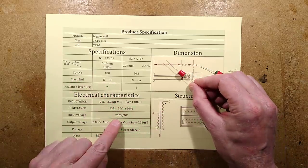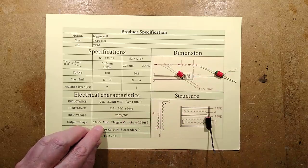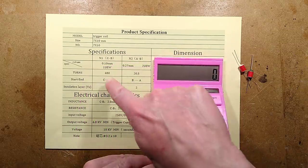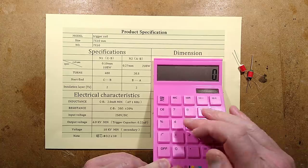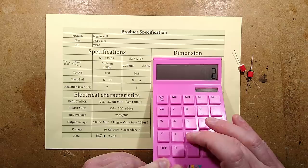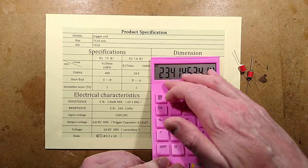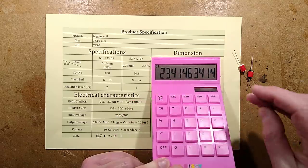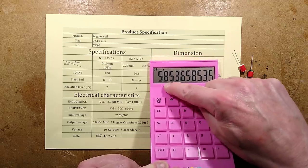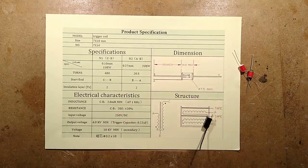This is rated for an input voltage of 250 volts and an output voltage of 6kV. Let's do the math. The winding ratio is 480 divided by 20.5, so that's the secondary divided by the primary, equals a winding ratio of about 23.4. With 250 volts times that, it would step up to 5800 volts. So that's pretty close to their 6000 volt rating.